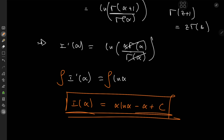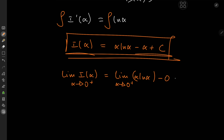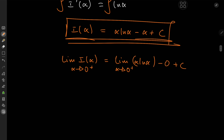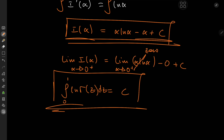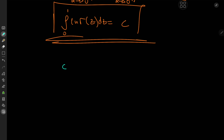How exactly do we calculate the value of C? The limit as alpha approaches zero from the right is quite nice to work with. We have the limit of I(alpha) as alpha → 0⁺ equal to the limit of alpha·log(alpha) minus zero plus C. Using L'Hôpital's rule, alpha·log(alpha) converges to zero. So C equals the limit on the left-hand side, which is the integral from zero to one of log gamma(z) dz.